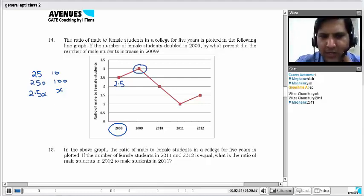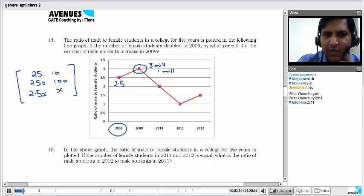The next year, it became 3. It does not have any connection with this number. Let me tell you what could be a possible number of males and females in this year. It could be 3 million males and 1 million females. In one year, it is 25 and 10 and the other year it is 3 million and 1 million.